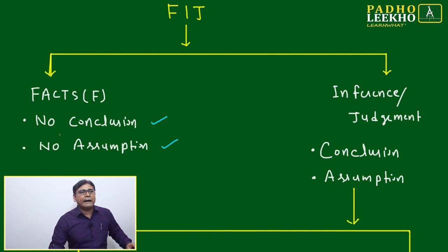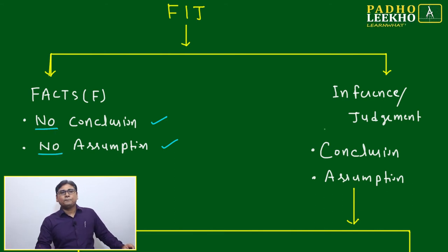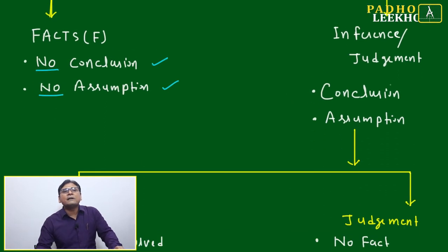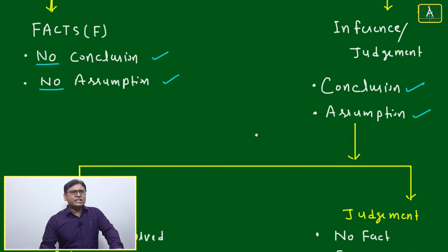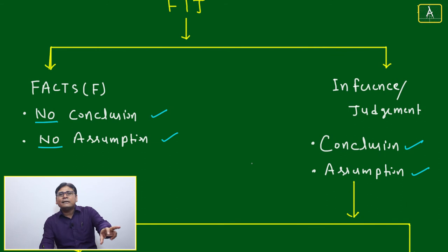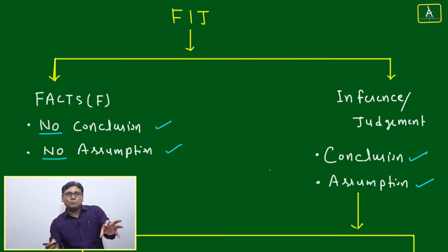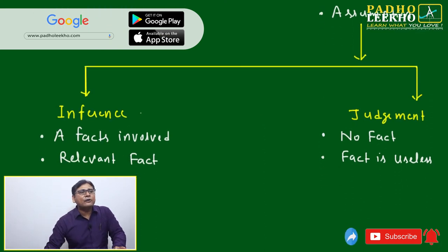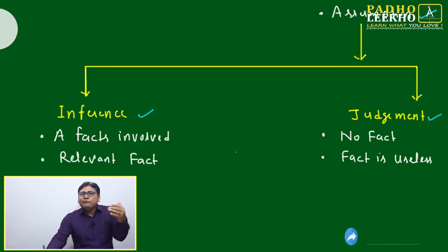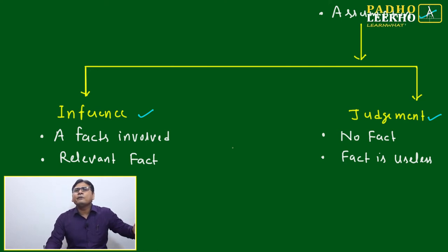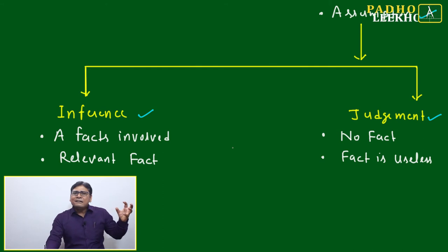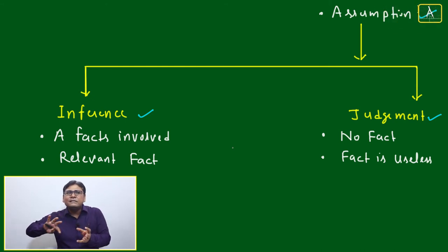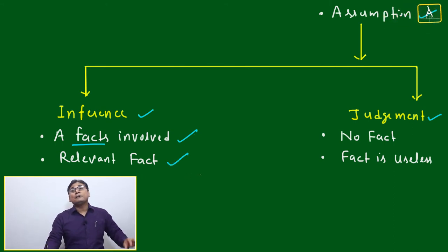The key point: wherever data is given, that is one criterion for a fact. For a fact, there should be no conclusion and no assumption. For both inference and judgment, conclusion and assumption should be present. Inference is like 'infer' — from any given fact, we infer: we take the fact and rephrase or restate it slightly. A fact is always involved in inference; we just add a little bit of elaboration.